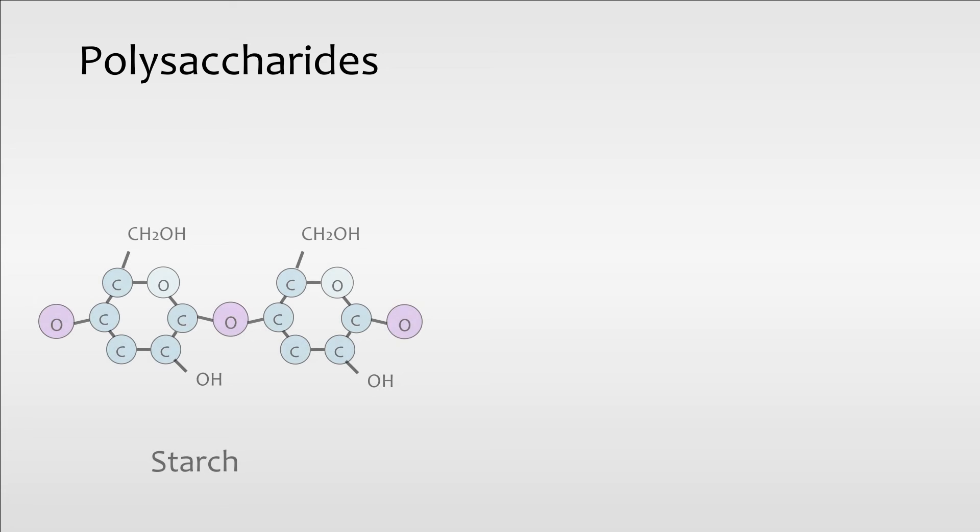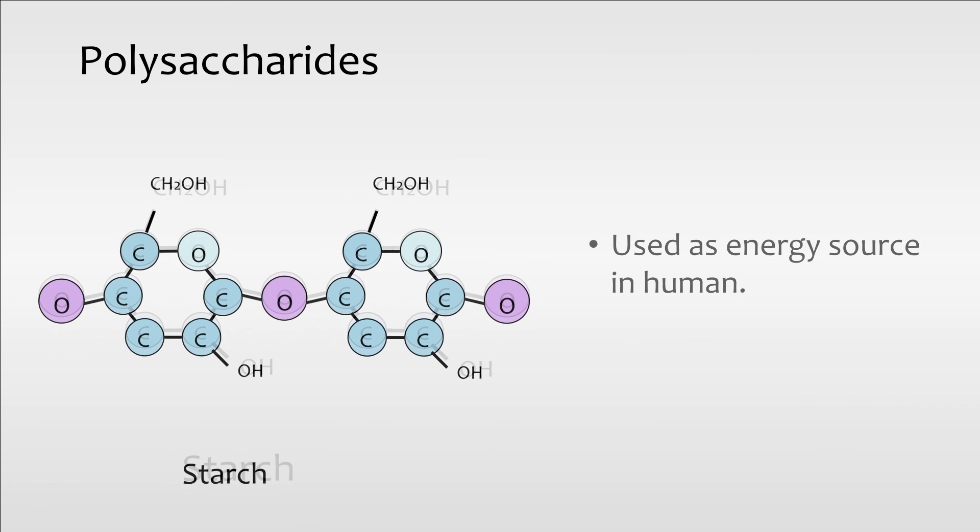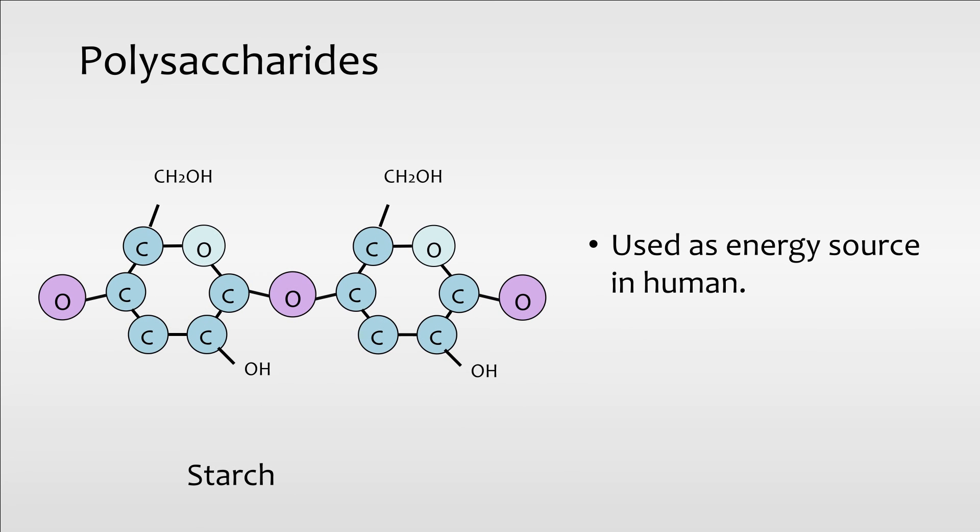The other important polysaccharides such as starch and cellulose are found in plants. Both starch and cellulose are formed of long chains of glucose and serve as energy storage molecules in plants. When we consume and ingest plants such as fruits or vegetables, the starch in the food can be broken down and be used as an energy source.